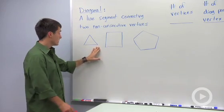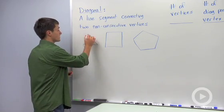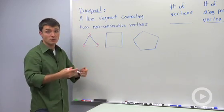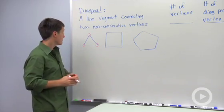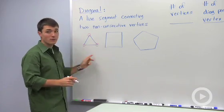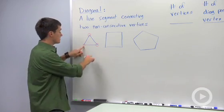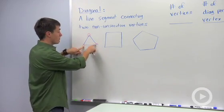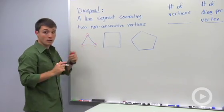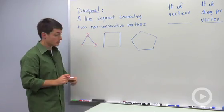So if we look at a triangle, if I look at every single vertex—the vertex is where two ends meet, two sides meet—there's no way for me to draw in a diagonal here, because for this vertex, both of these sides are consecutive. So there's no way for us to have any diagonals.